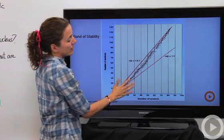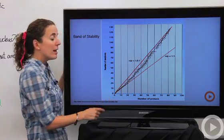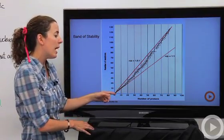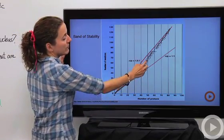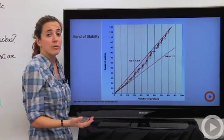Where this dotted line is in the middle, this kind of fuzzy dotted line, that is where things are stable. So if you figure out the neutron to proton ratio and you find that it's within this band of stability, then you're not going to have a nuclear reaction.